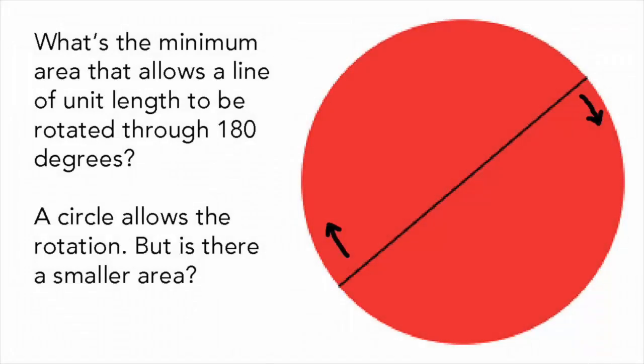Kakeya asked this question. What's the minimum area needed so that you could place a needle of unit length inside the area and be able to rotate it through 180 degrees so that it gets back to its starting position, but pointing in the opposite direction?